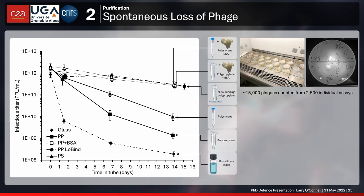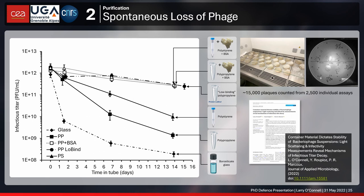What we found was indeed a dramatic loss of bacteriophages very quickly from suspension. The worst performer was actually glass tubes — after about two days we'd already lost 90%, then 99% of our phages. Polypropylene, which we had been using, is not that much better. We showed that biosilicate glass is by far the worst. However, if you pre-incubate the surface with BSA, you can really limit the loss of bacteriophage from suspension. We were happy to present this work in the Journal of Applied Microbiology.